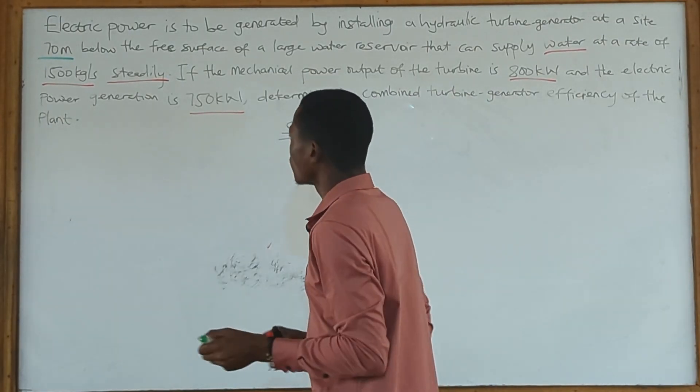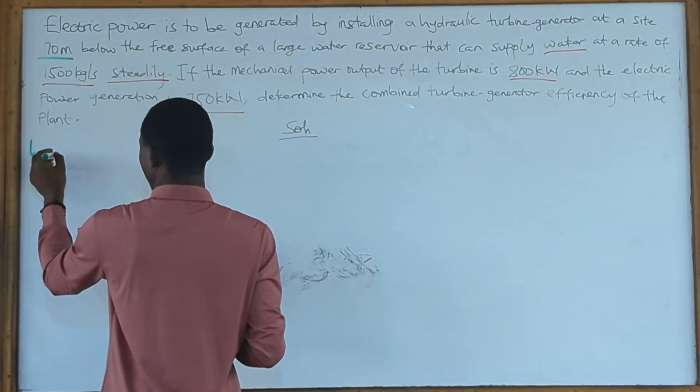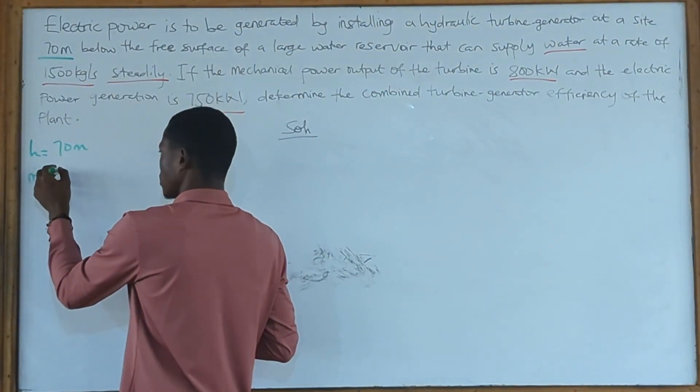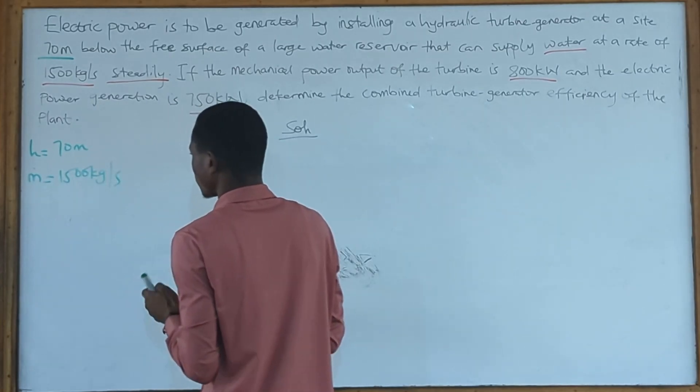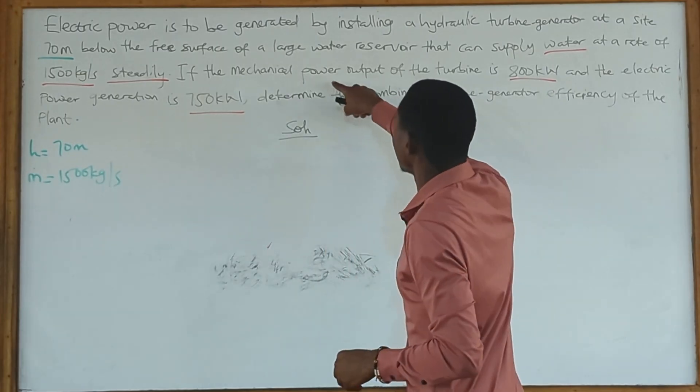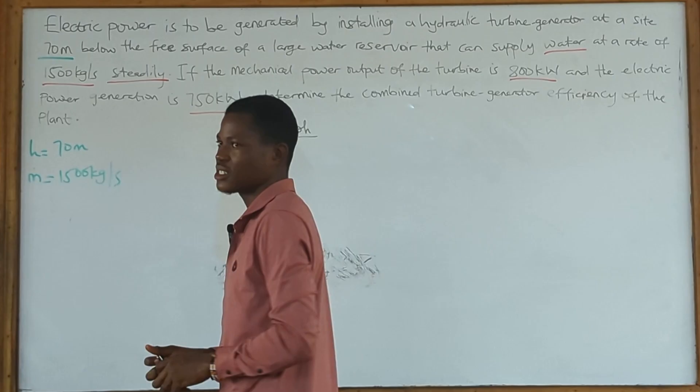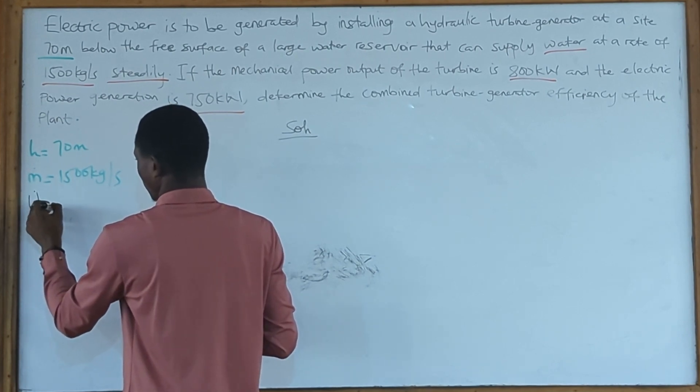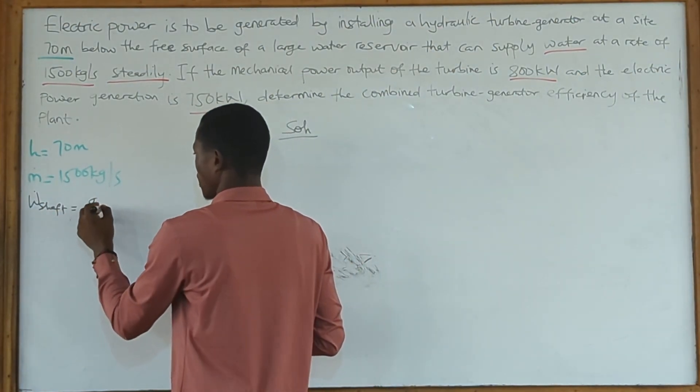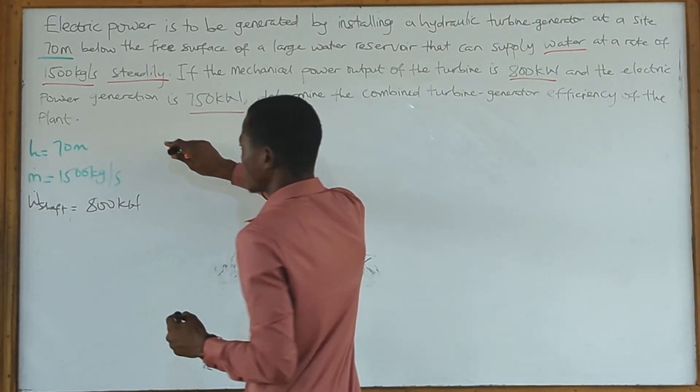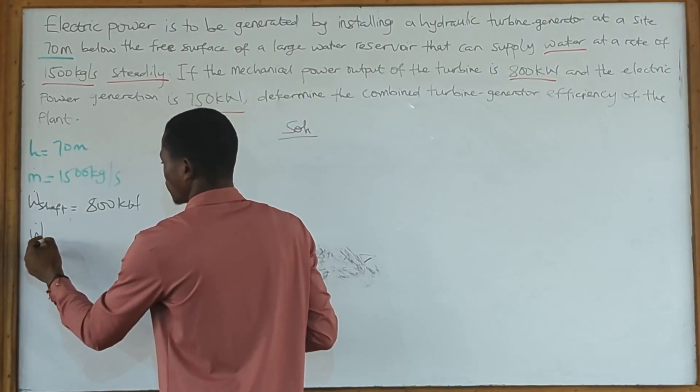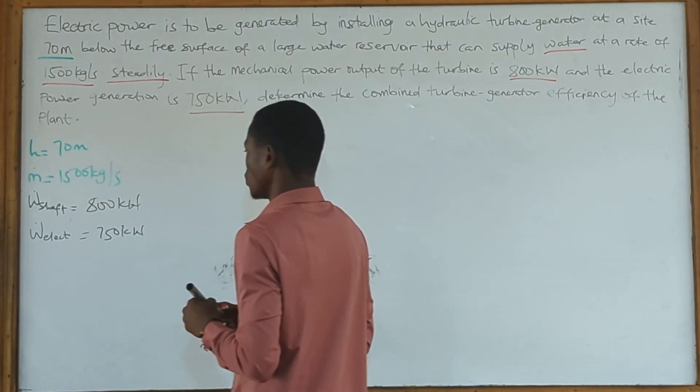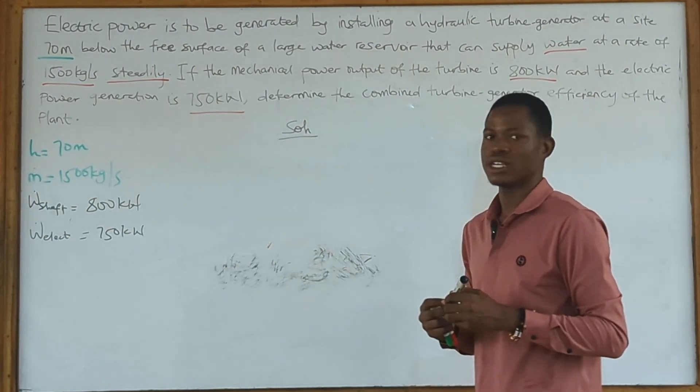Let's write down our parameters. We have a height of 70 meters from the free surface. We have the mass flow rate to be 1500 kilograms per second. The mechanical work output, our shaft work w_shaft, equals 800 kilowatts, and our electric power generation w_electric equals 750 kilowatts.